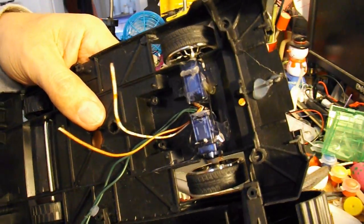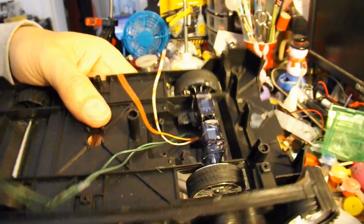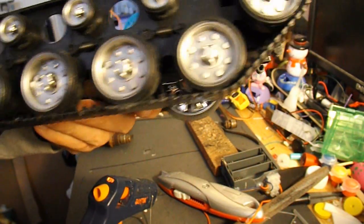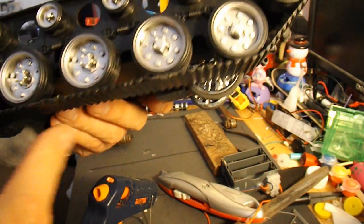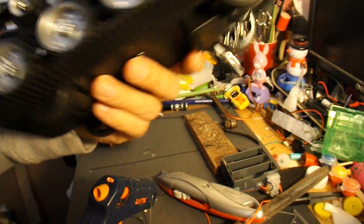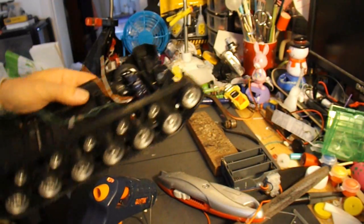There's our two servos, hot glued in place, and the wheels just clearing the edge of the track, which is the same as the front wheels do anyway. So now we need to fit the radio receiver.